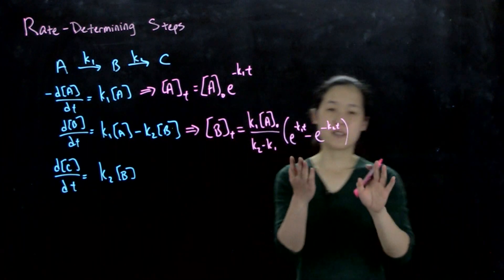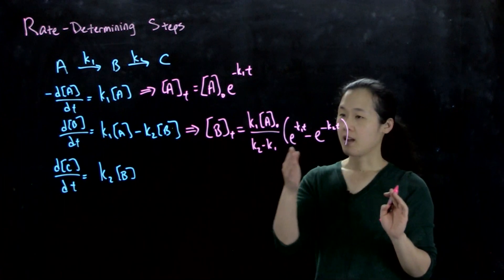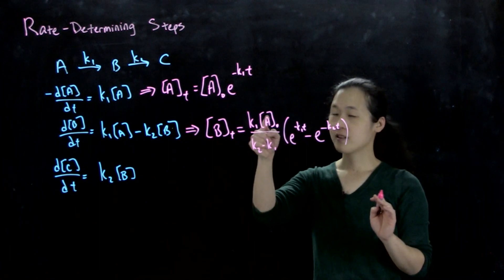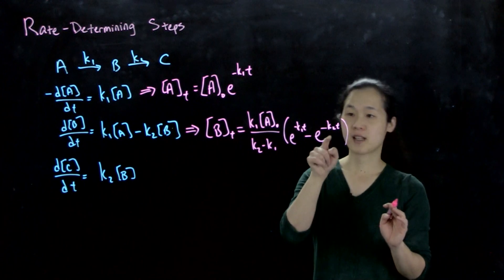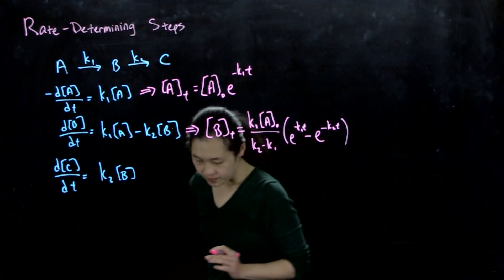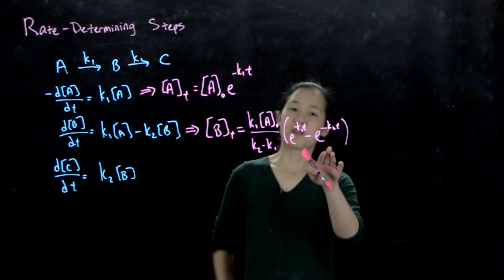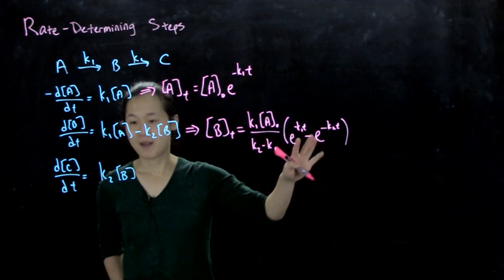So this is because we have two things: B is being formed first-order from A, and then it's being consumed first-order in B. That's why it's the exponential.